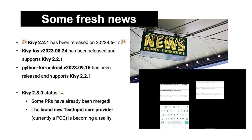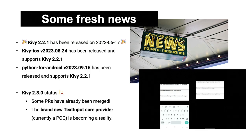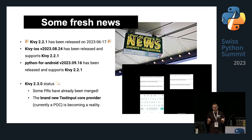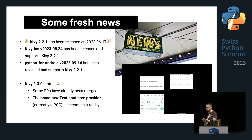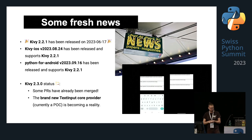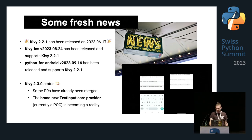Some fresh news: Kivy 2.2.1 was released in June. Kivy iOS was updated to support Kivy 2.2.1 in August. Python-for-Android's last version was released a couple of days ago and now supports Kivy 2.2.1. Regarding Kivy 2.3.0 status, some PRs have already been merged, and I'm working on a brand-new text input core provider — currently a proof of concept but becoming a reality.